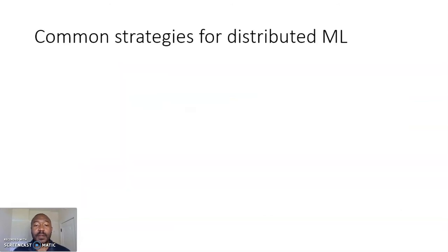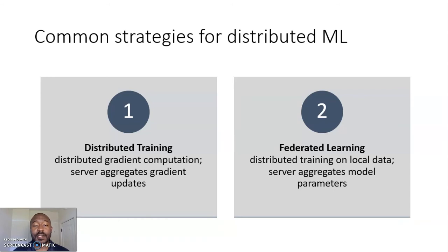So I will focus on two of the most common strategies for distributed machine learning. The first approach is distributed training. This involves distributed gradient computation where the server aggregates gradient updates. The second is federated learning which involves distributed training on local data where model updates are computed on the devices and the server aggregates model parameters.